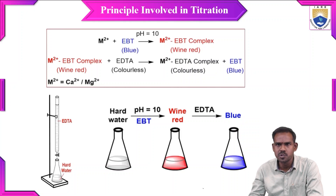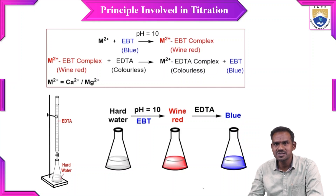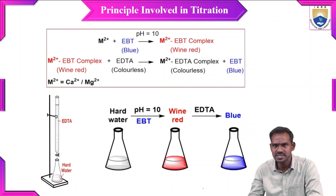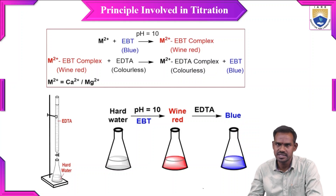Why is the final color blue? The EDTA complex as such is colorless, but EBT returns to its free form whose color is blue. Because of that, at the end point you can see a blue colored solution. So the initial color is wine red, due to the unstable EBT complex with Ca2+ or Mg2+, and after titrating against EDTA the color appears blue — not due to the EDTA complex of Ca or Mg, but due to the free form of the EBT indicator.